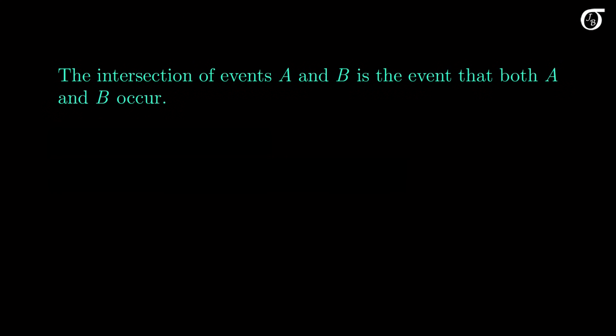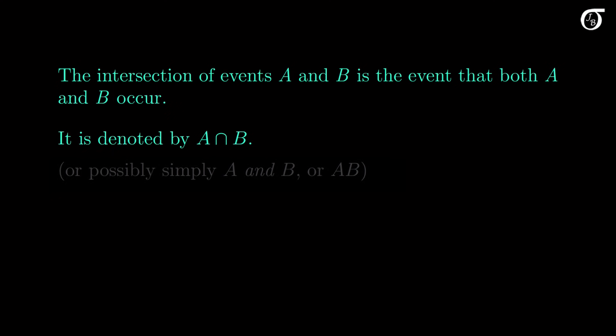The intersection of events A and B is the event that both A and B occur. It is typically denoted by A intersect B, with the intersection symbol. But you might also see A and B, or possibly just AB, representing the intersection.